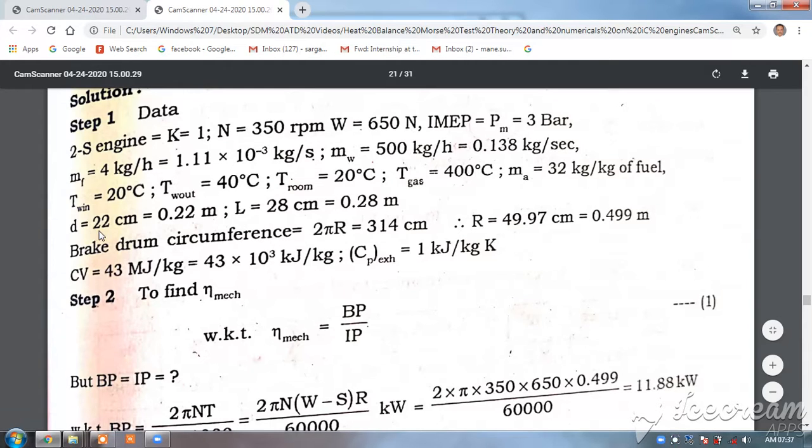Diameter d = 22 cm = 0.22 m, length of stroke L = 28 cm = 0.28 m, brake drum circumference 2πR = 314 cm, therefore R = 49.97 cm or 0.499 m.